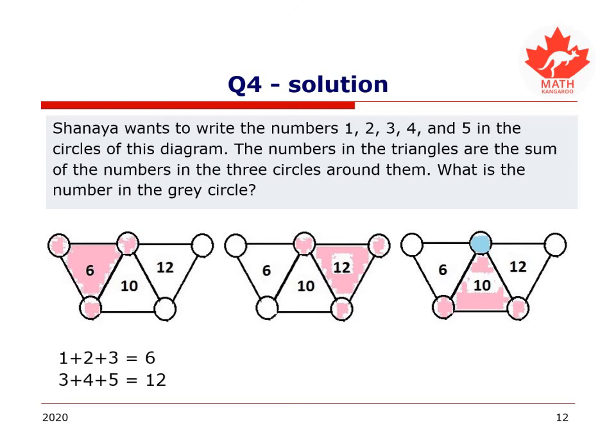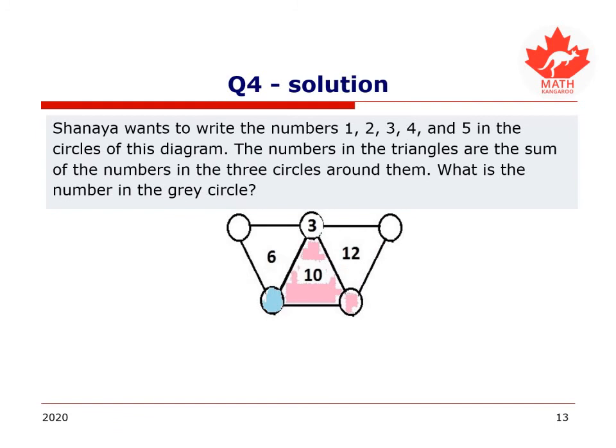Then I need two numbers that together will make up 10 minus 3, right? Because I need a sum of 10 in the three circles around 10, but I know that there's a 3 up at the top. So what two numbers between 1, 2, 4, and 5 sum up to 7? The only two numbers are 2 and 5. I now know where the 2 goes, and I know where the 5 goes. This blue circle, well, we want to make 7, so we will put a 2 there. We will put a 5 there, and then we will put a 1 in the top left corner and a 4 in the top right circle.